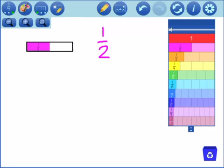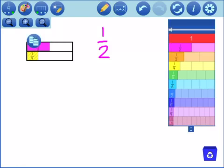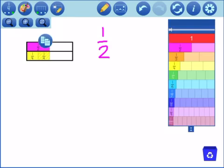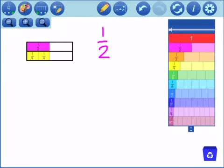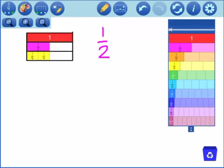So if we start with the fraction 1 half, and we want to find equivalent fractions, we want to find fractions that are equal to that. In fact, we would find fractions that hold the same value. So that means they're going to fill the same space within a whole.